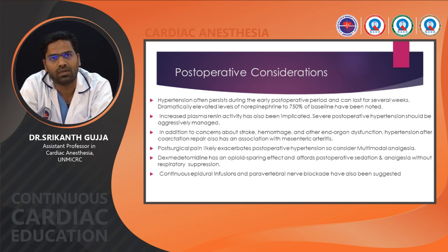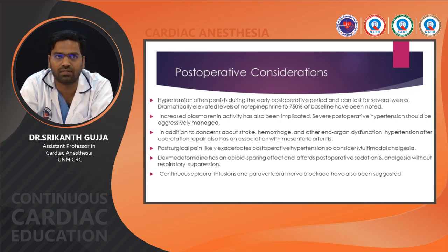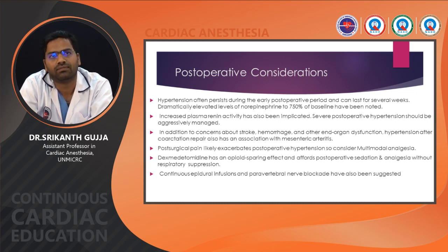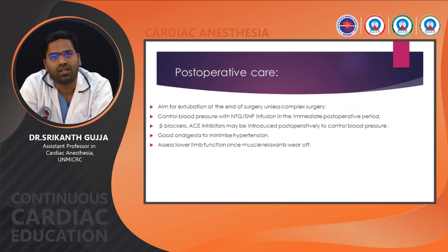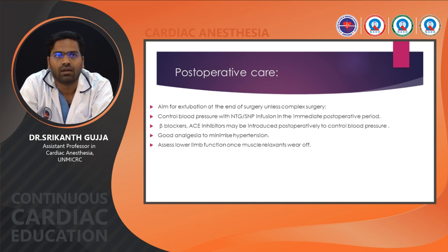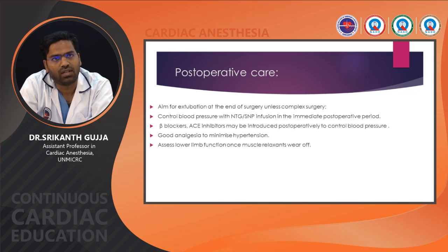Post-surgical pain likely exacerbates postoperative hypertension, so consider multimodal analgesia. Dexmedetomidine has an opioid-sparing effect and offers postoperative sedation and analgesia without respiratory depression. Continuous epidural infusion and paravertebral blocks have been suggested. Control BP with NTG or SNP infusion in the immediate postoperative period. Beta-blockers and ACE inhibitors may be introduced postoperatively to control pressure.